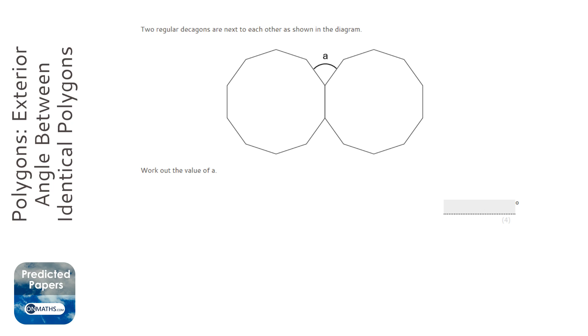This question looks quite complicated at first, but actually there are two very simple-ish ways of doing it. We've got two decagons, which means they are ten-sided. You can just count the sides if you want, but if it says it's a decagon, I trust it, it's a decagon.